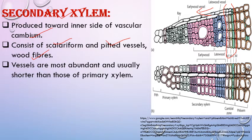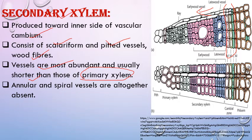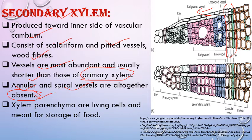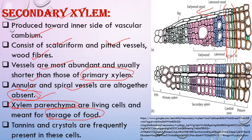Xylem parenchyma is living — it is the only living component of xylem; all other xylem components are non-living. Its main function is storage of food. It also stores tannins and some crystals present in xylem parenchyma cells.